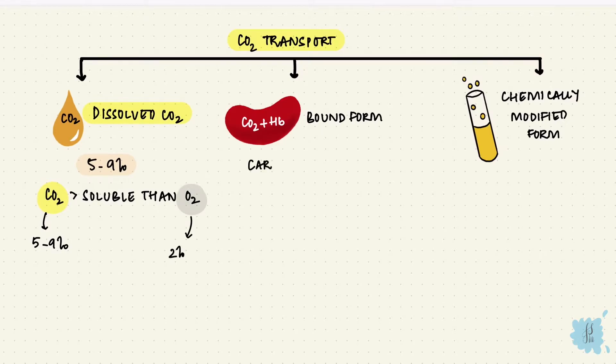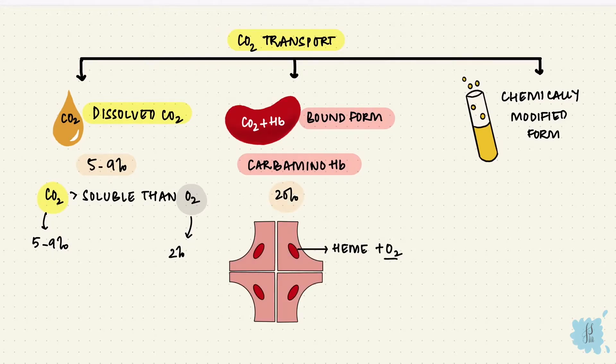The bound form is with hemoglobin as carbamino hemoglobin. This is around 20 percent. Carbon dioxide binds to hemoglobin at a different site than oxygen, the end terminus of the globin chain.